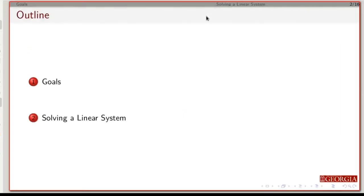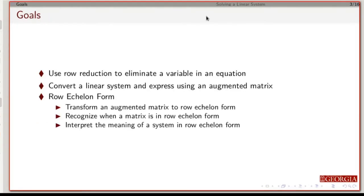So what we're going to do here is I'm going to first talk about some of our goals, and then I'm going to talk about the operations we can use to solve a linear system. So by the end of this, you should be able to use row reduction, so that each time you take a step using row reduction, you will eliminate one variable from your systems of equations.